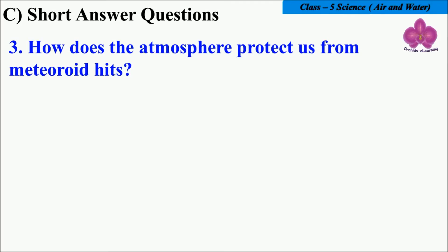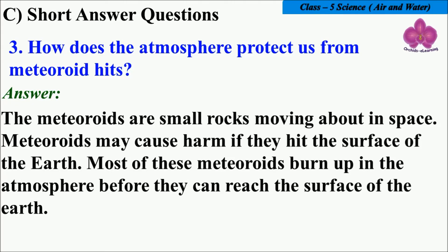Next, how does the atmosphere protect us from meteoroid hits? The meteoroids are small rocks moving about in space. Meteoroids may cause harm if they hit the surface of the earth. Most of these meteoroids burn up in the atmosphere before they can reach the surface of the earth. In this way they protect us from hits.